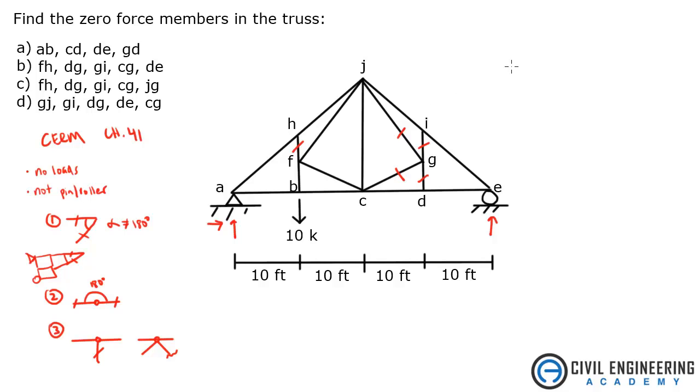So I think that's all the zero force members. So we've got FH, DG, GI, CG, JG, that looks like that is answer C on this one.